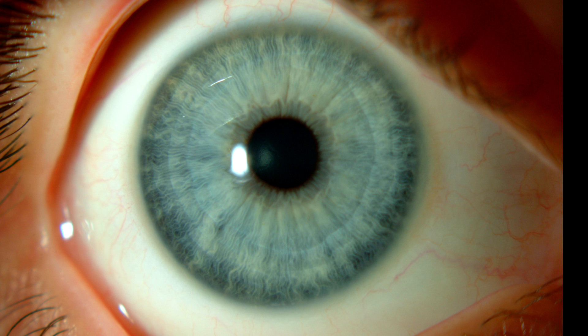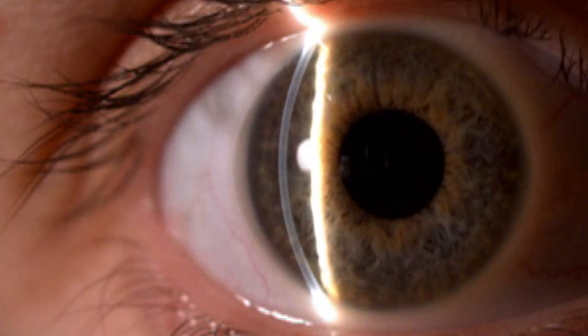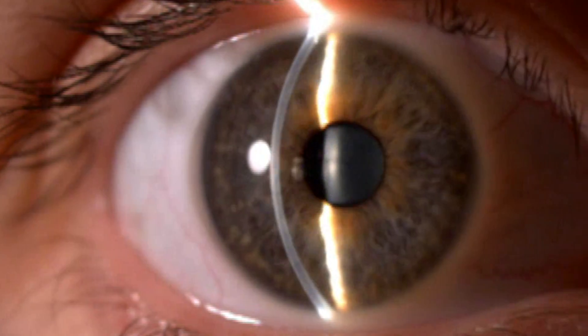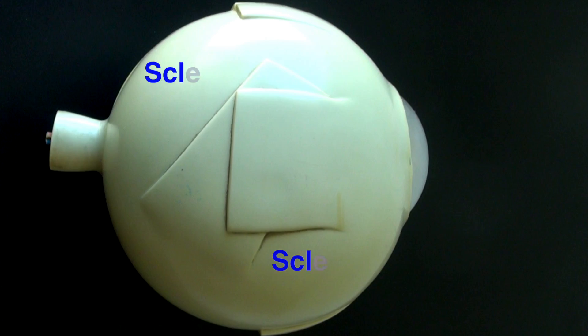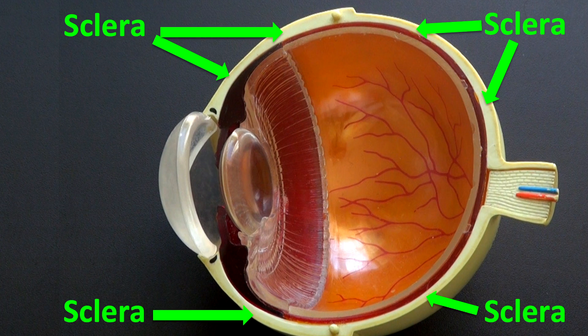When we observe an eye, we can see the iris has color and the sclera is white. The cornea is located in front of the iris, but we don't see it because it's transparent. We can visualize it with a special microscope called slit lamp. The sclera is white and opaque and covers the whole posterior surface of the eye.